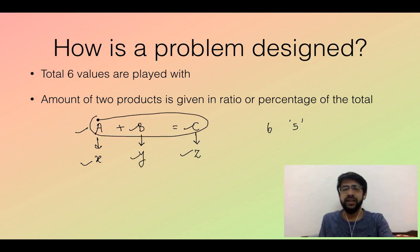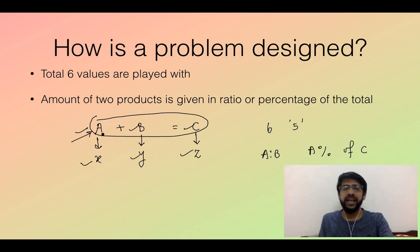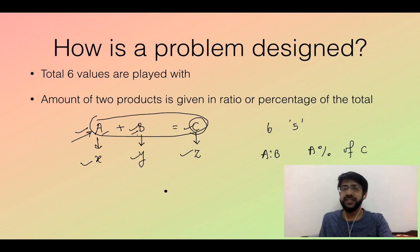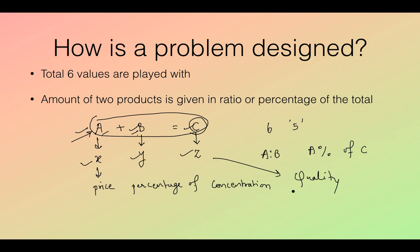Out of these six quantities, any five will be given and you will be asked to find the sixth. The catch is that out of these six, only five are independent because we already have one equation: a plus b equals c. So the amount of two products is given in ratio or percentage of the total amount — not as a straightforward addition but as a ratio a:b or a percent of c. The parameters x, y, and z are also known as mixture coefficients.